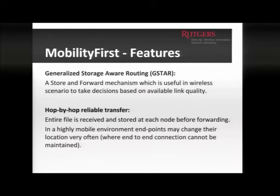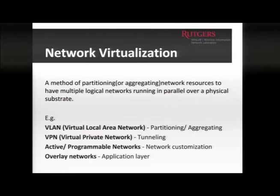G-star is the underlying routing protocol for Mobility First. It has a store-and-forward mechanism — at every router, the message is stored before being forwarded to the next hop. This helps in mobile scenarios with fluctuating links, since you can wait for conditions to improve before forwarding. G-star also uses hop-by-hop reliable transfer, different from TCP's end-to-end connection: at every router, you wait for the entire chunk to be received before forwarding it.